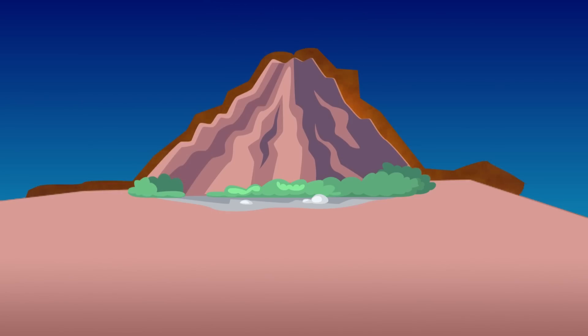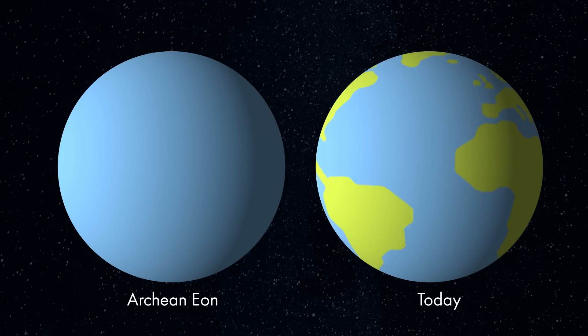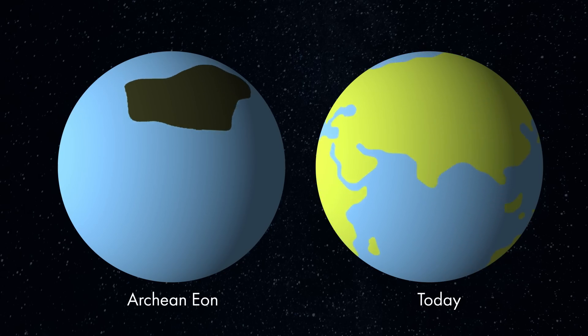This process happened over billions of years, and back in the Archean Eon, it's estimated that only 2-3% of the Earth's surface was land, compared to the almost 30% we have today.